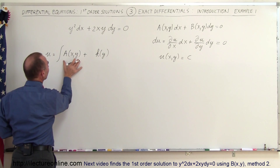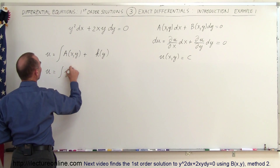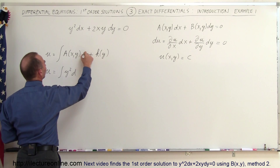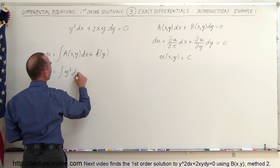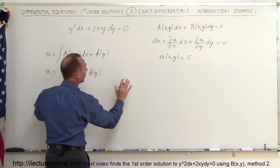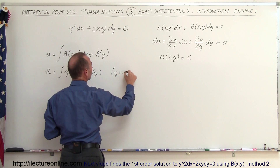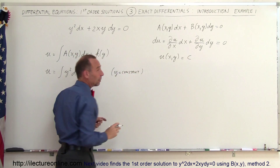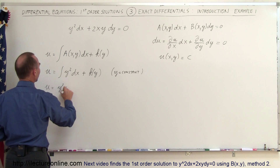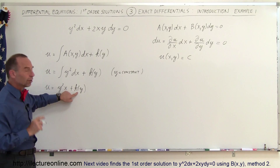Plugging in M, which equals y squared, we can say that u is equal to the integral of y squared dx plus the constant of integration k(y). Integrating, and keeping y constant, u is therefore equal to y squared times x plus some function k(y). We now need to figure out what that function is.